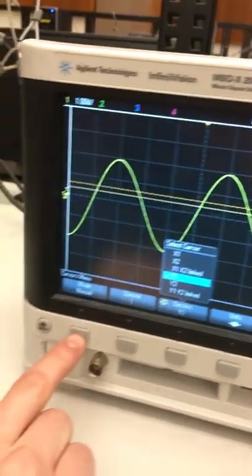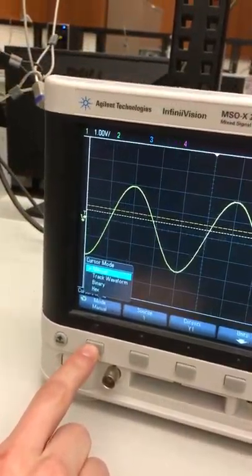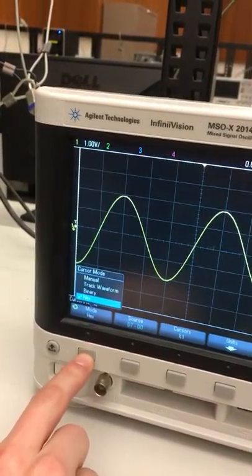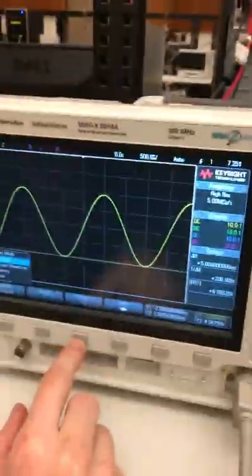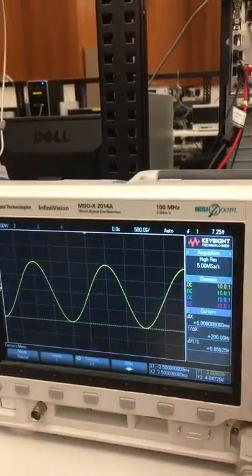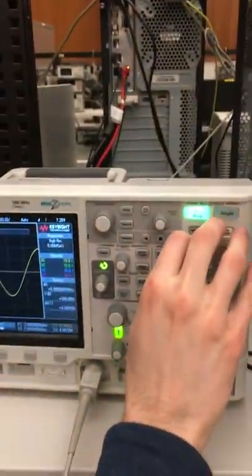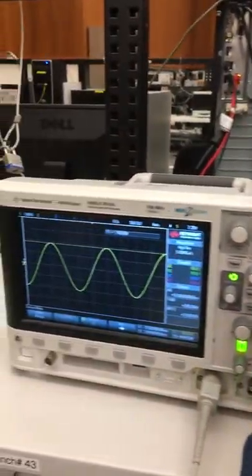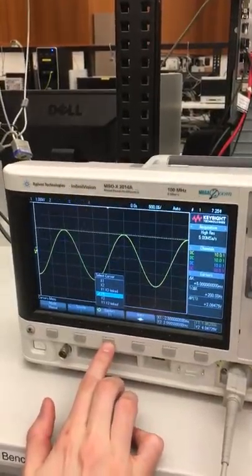So set it to manual and to check the height of this, let's get our y1 cursor and bring it to the top of the wave. Select the y2 cursor.